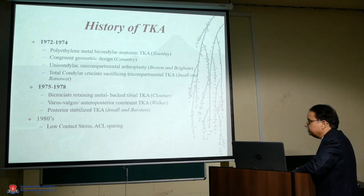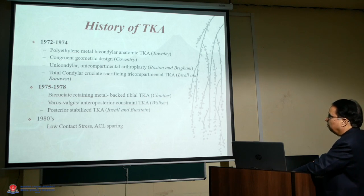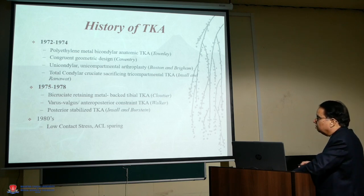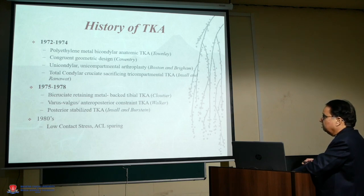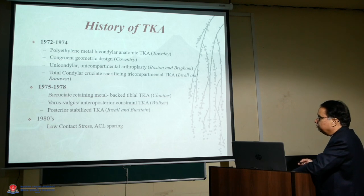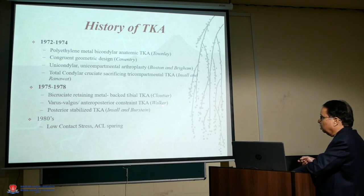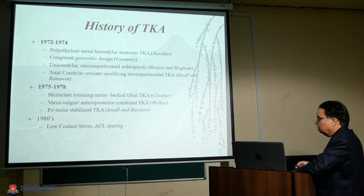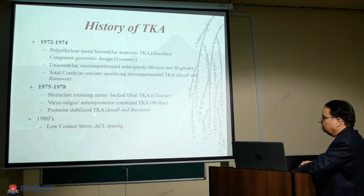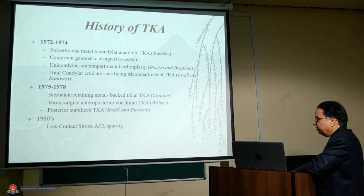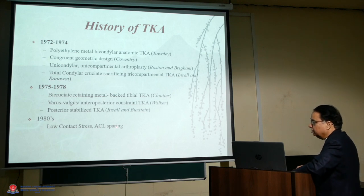In 1975 to 1978, the bicruciate-retaining metal tibial TKA was in use. Valgus anterior-posterior constrained TKA was started by Walker. Insall suggested posterior stabilization of the tibial component. In 1980, the low contact stress ACL-sparing component came, which was very successful — even today people are still using it.